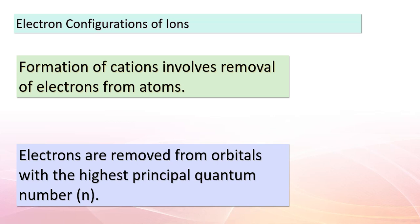We begin removing electrons from the occupied orbitals that have the highest principal quantum number, n. Think of n as the energy level of the orbital. For example, a lithium atom with the electron configuration 1s²2s¹ — if we remove one electron, it's the 2s¹ electron that is removed, giving Li⁺ with an electron configuration of 1s².